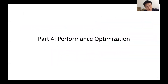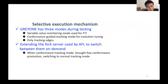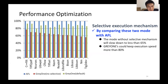Lastly, we introduce the performance optimization of GREYONE. In addition to checking edges, GREYONE adds two new modes: one for FTI and the other for conformance computing. When conformance checking mode brings few conformance promotions, it will switch to normal edge-checking mode. Comparing GREYONE with AFL, the modes without the selective mechanism slow down to less than 65%, but once launching the selective mechanism, GREYONE keeps execution speed above 80%.